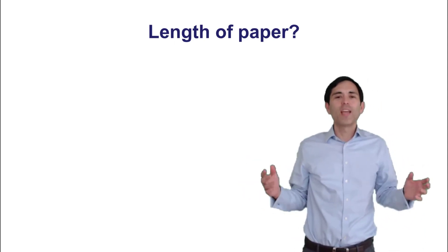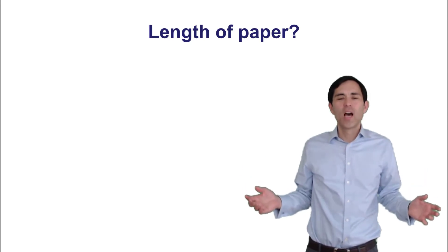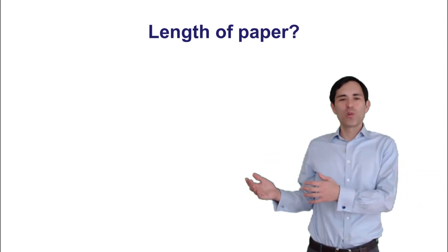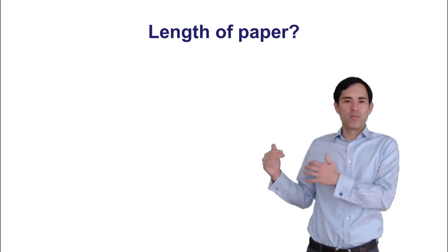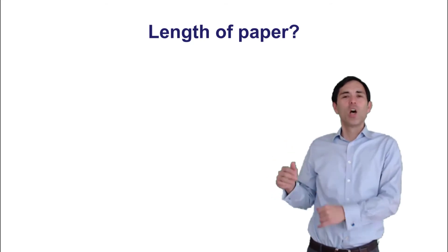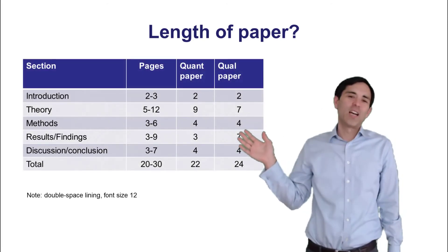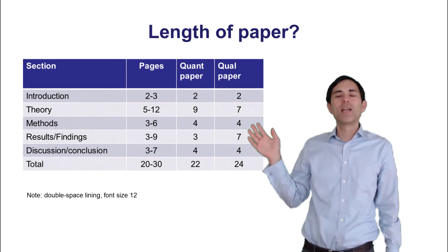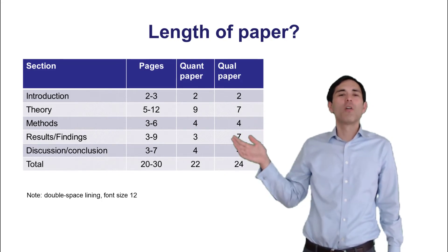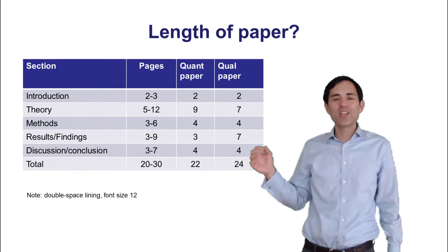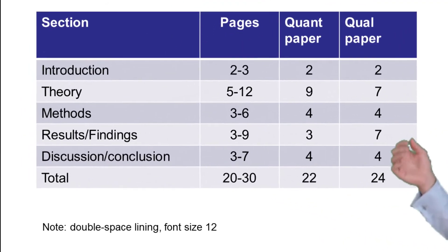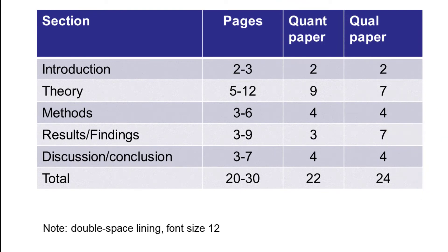All right, assuming a length of 8,000 words, approximately give or take, how would we distribute these words across these different sections? Remember, the structure of a manuscript consists typically of 5 sections. Here you can see the table. I've just listed some very tentative numbers to give an overview of how many pages you can allocate to each section. Here these page numbers refer to double-spaced lining and font size 12, which is also the typical way how you prepare your manuscript for journal submissions.